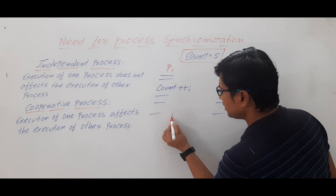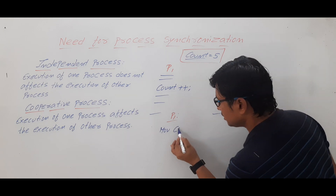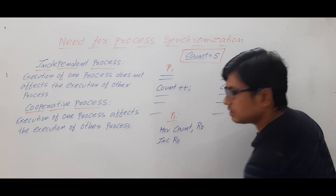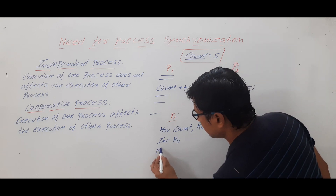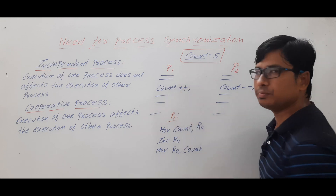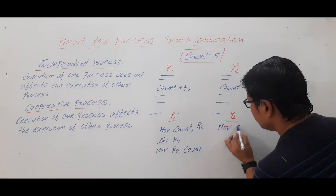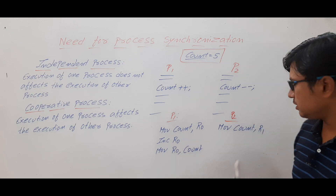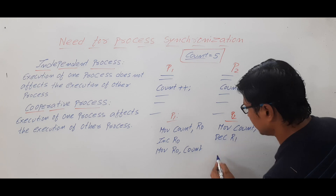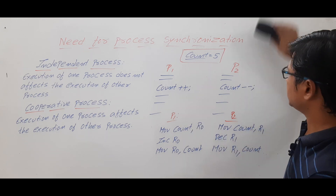For P1, the assembly code for count++ is: (1) MOV count, R0 — move the count variable into register R0; (2) INC R0 — increment R0; (3) MOV R0, count — move R0 back to count. For P2, the assembly code for count-- is: (1) MOV count, R1 — using register R1; (2) DEC R1 — decrement R1; (3) MOV R1, count — move R1 back to count.